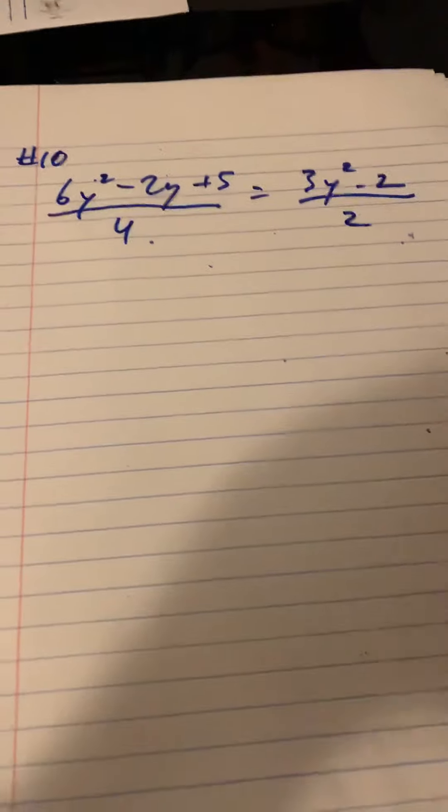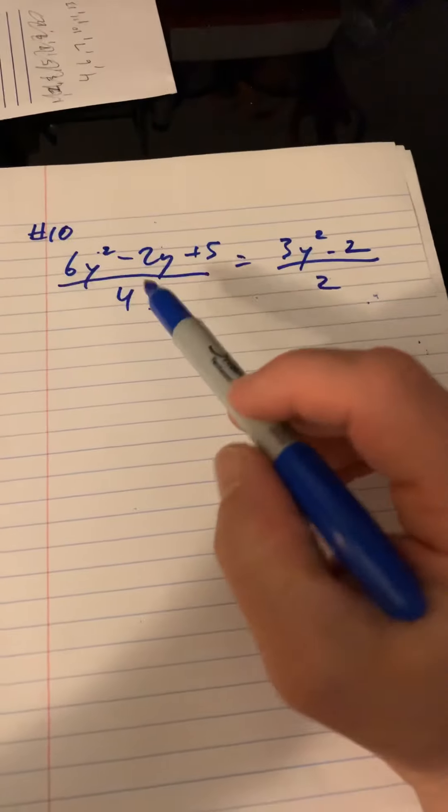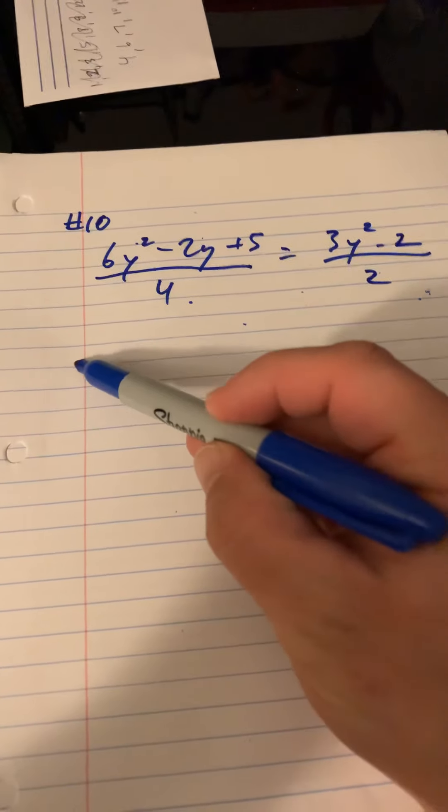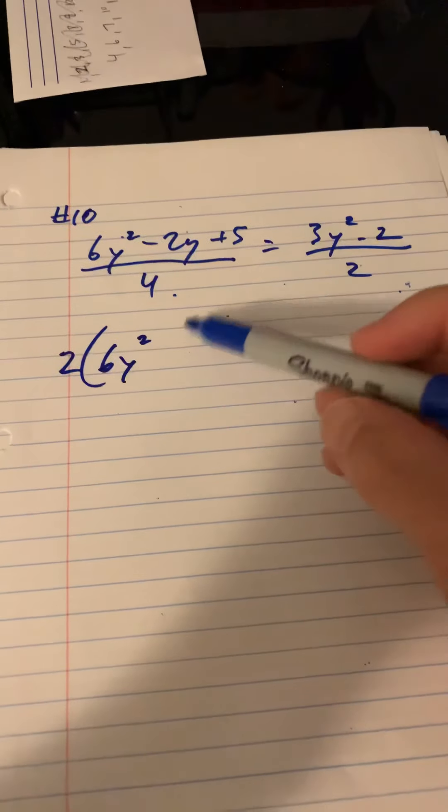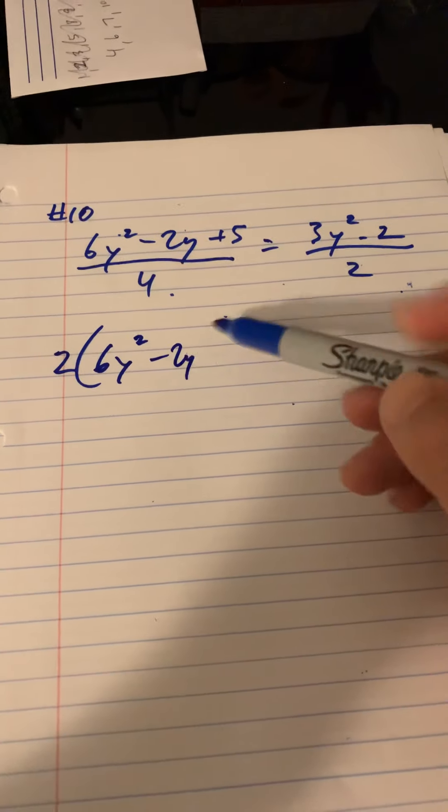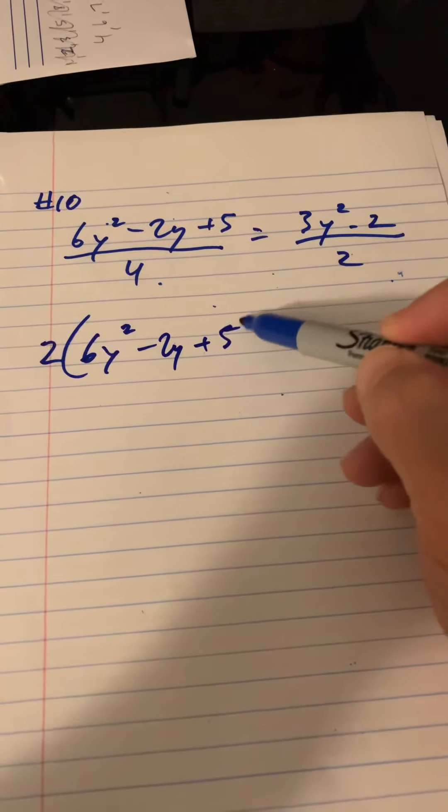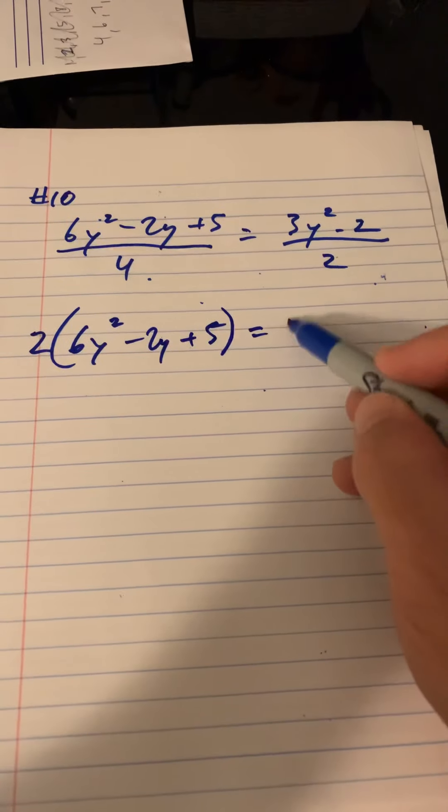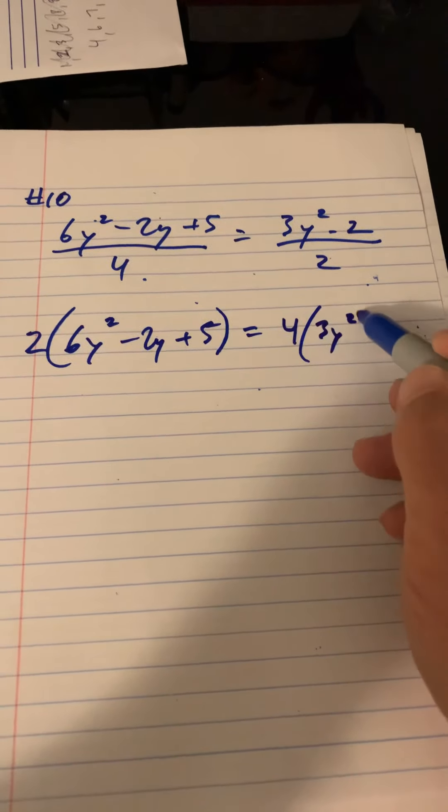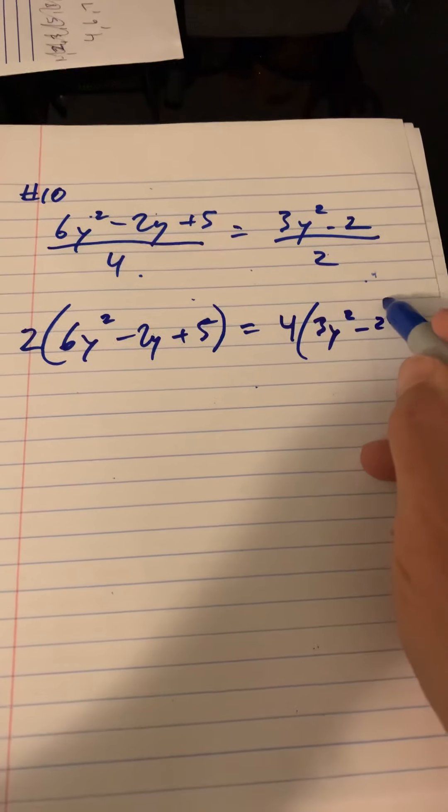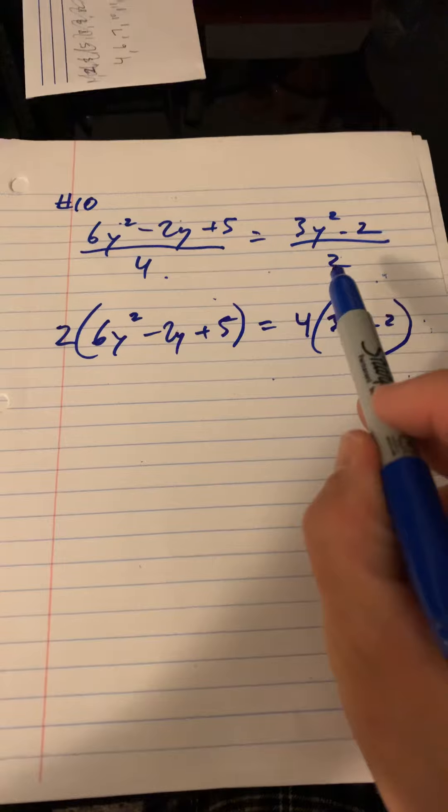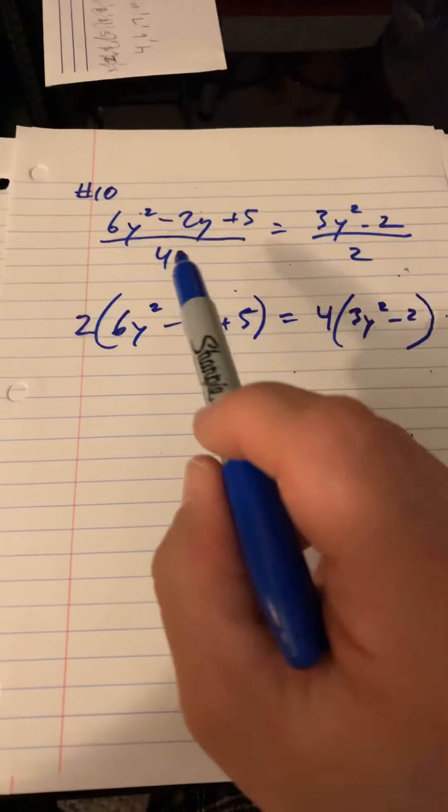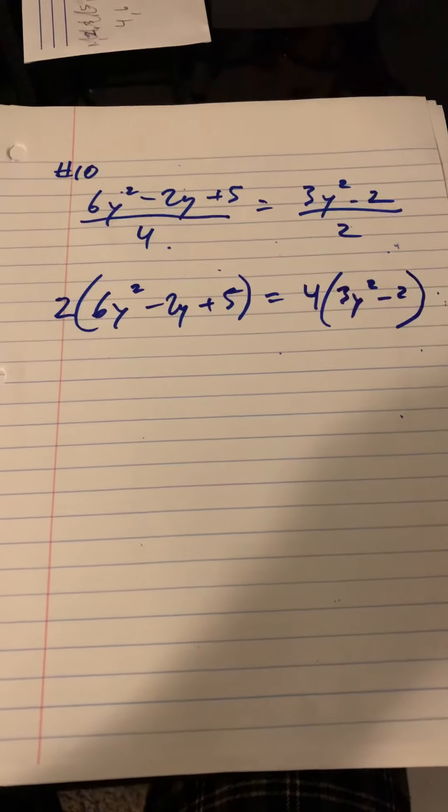Alright, so same thing here. I'm going to cross multiply. So it's going to be 2 times 6y squared minus 2y plus 5 equals 4 times 3y squared minus 2. See what we did there? We just took this 2 times that. And then 4 times that.